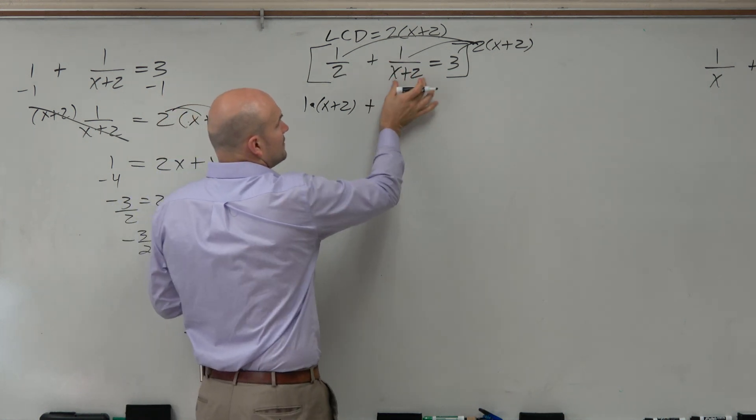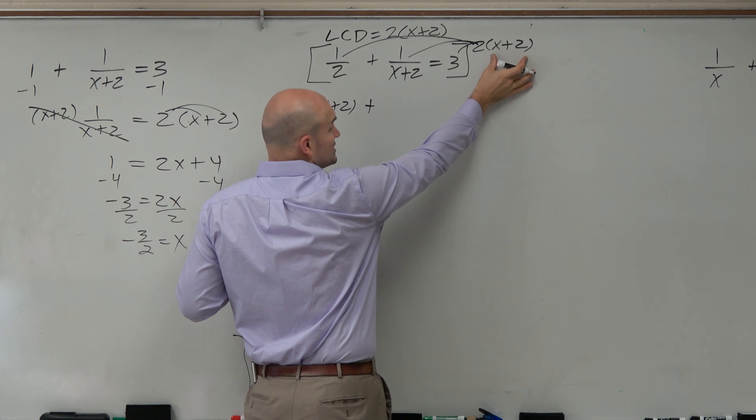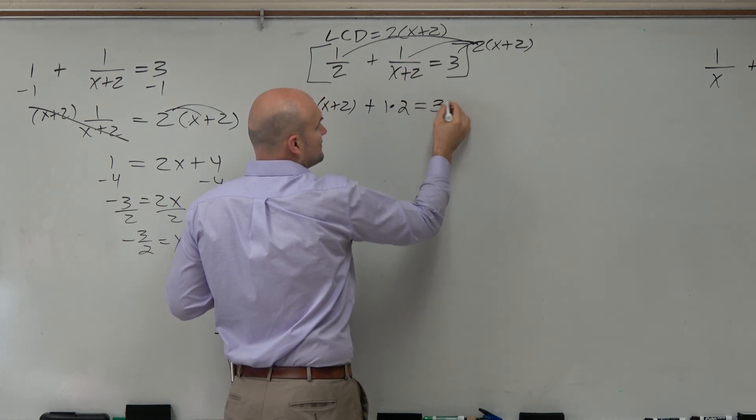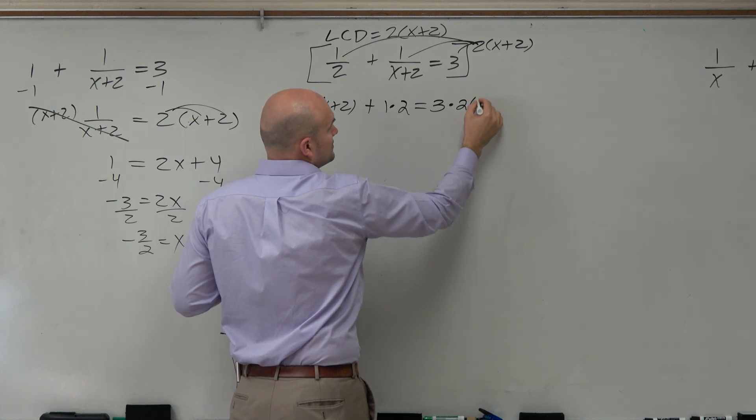Over here, the x plus 2's divide out to 1, so you're just left with 1 times 2. And here, you're left with 3 times 2 times x plus 2.